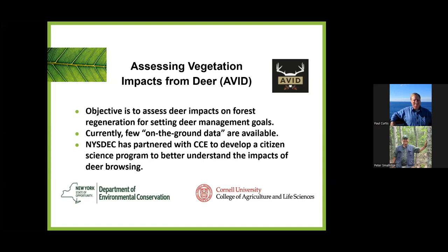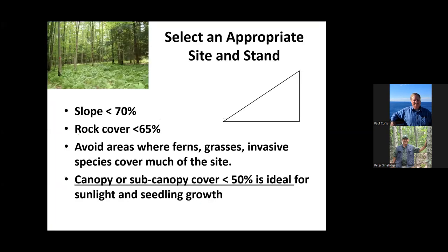DEC partnered with Cooperative Extension to develop a citizen science program to better understand the impacts of deer browsing in more real-time than available with the FIA database. If you're going to use AVID, first you've got to select an appropriate site and stand. You don't want too steep a slope or too much rock cover. You want sites accessible for deer where vegetation is going to grow well. Ideally, for tree seedlings, you want an open canopy or an area where the canopy and sub-canopy is around 50% — so enough sunlight reaches the forest floor where you'd expect to find seedling growth.